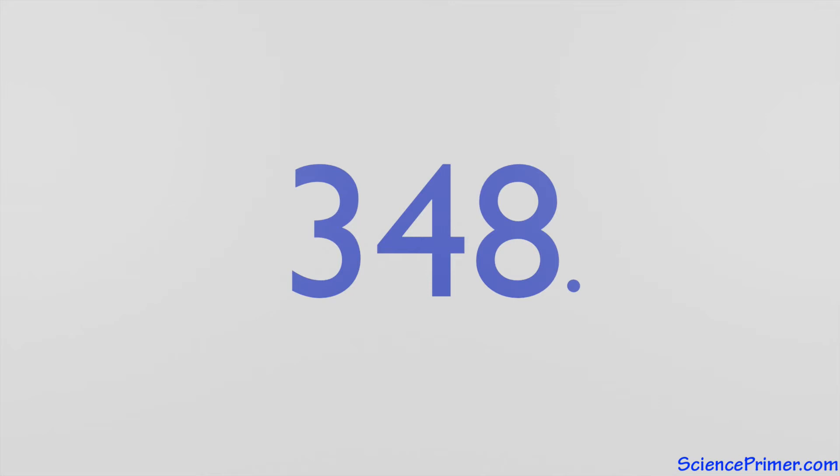To represent this value in scientific notation, the first step is to count the number of places the decimal mark needs to move until the value is between 1 and 10. For this example, the answer is 2, as the number 3.48 is greater than 1 and less than 10.